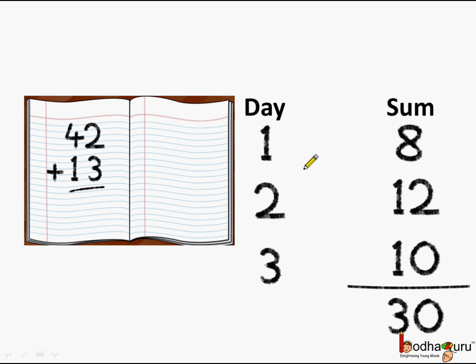3 tens are 30, which means he needs to solve 10 sums per day. Aman did not do exactly 10 sums per day — he did 8 sums the first day, 12 sums the second day, and 10 sums on the third day. The important thing was he was able to complete all 30 sums in 3 days.